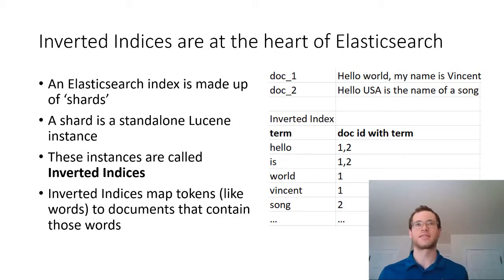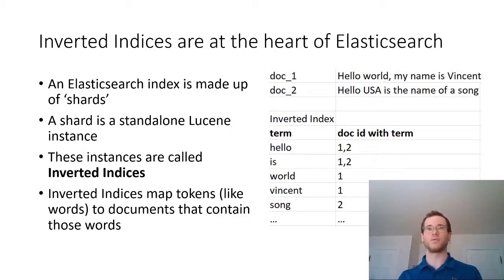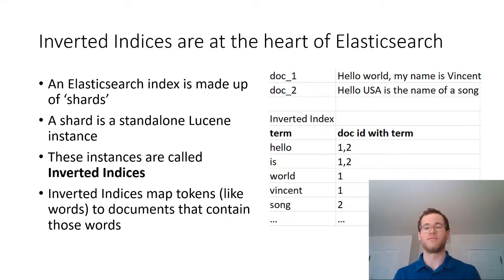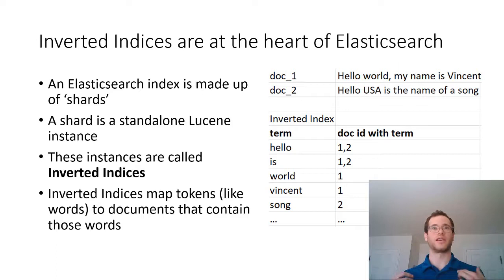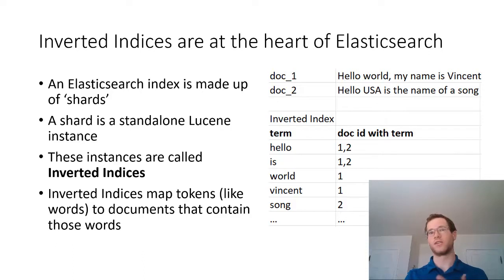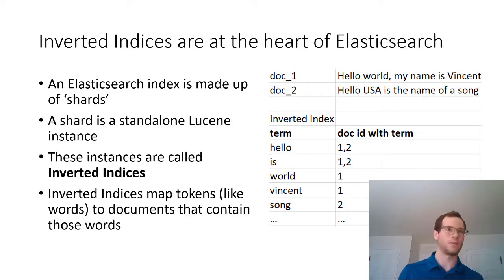So what is an inverted index? What I have here on the right is a sample of two documents — Doc ID 1 and Doc ID 2. You can read the contents of these two documents; these are just very basic sentences. In our inverted index, we basically map each term to the document IDs that have that term. So if I did a query for 'hello,' my inverted index shows that Doc IDs 1 and 2 both have that word. If I searched for 'world,' only document 1 has it, so document 1 is the only relevant result — I'm not going to care about document 2.